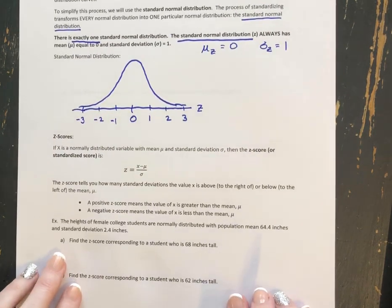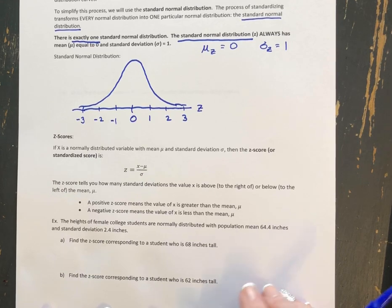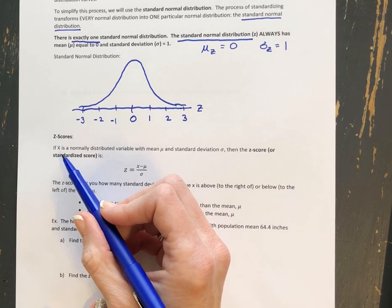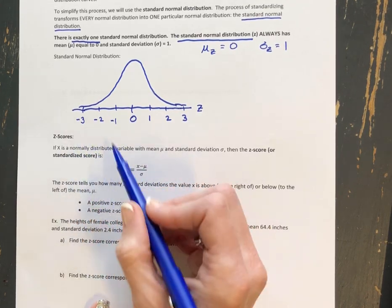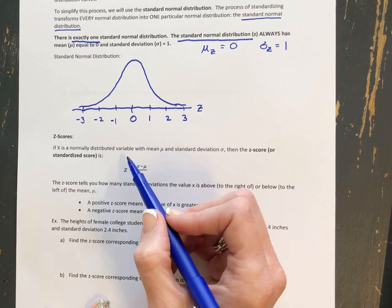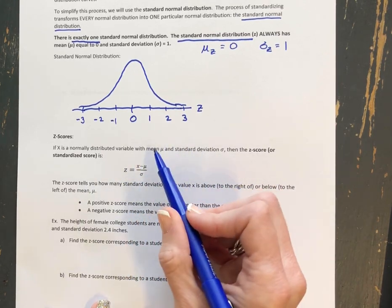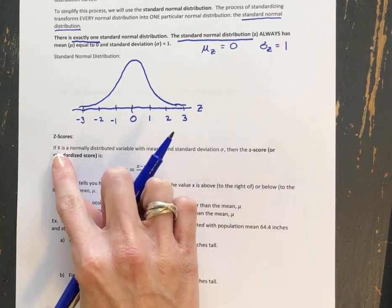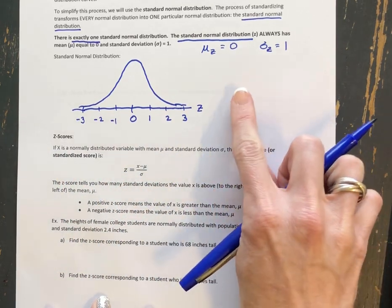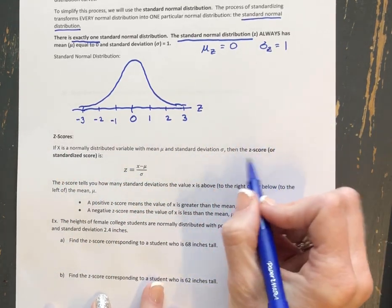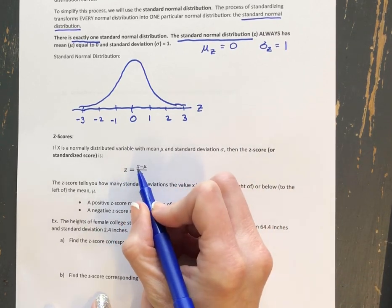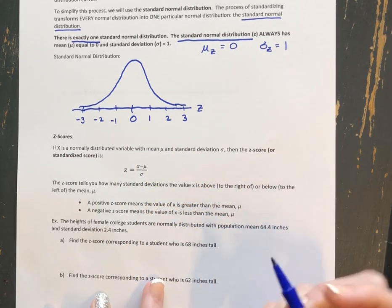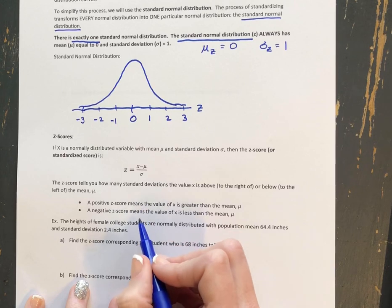The first thing we'll look at is the z-score: the formula for it and how to use it. If x is a normally distributed variable — for example, head circumference of infants — it has a mean and a standard deviation referring to x, not yet to the standardized variable z. We find a z-score by taking the observed x value, subtracting its mean, and dividing by its standard deviation.